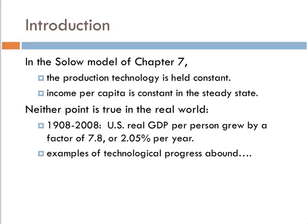But there's a problem with that. Output per worker, or income per worker, in the United States grows over time. We've seen a 7.8 times increase in output per worker over the hundred years from 1908 to 2008, which equates to about 2% per year. That's not zero, so the model from chapter 7 isn't quite enough to describe the data in the United States.